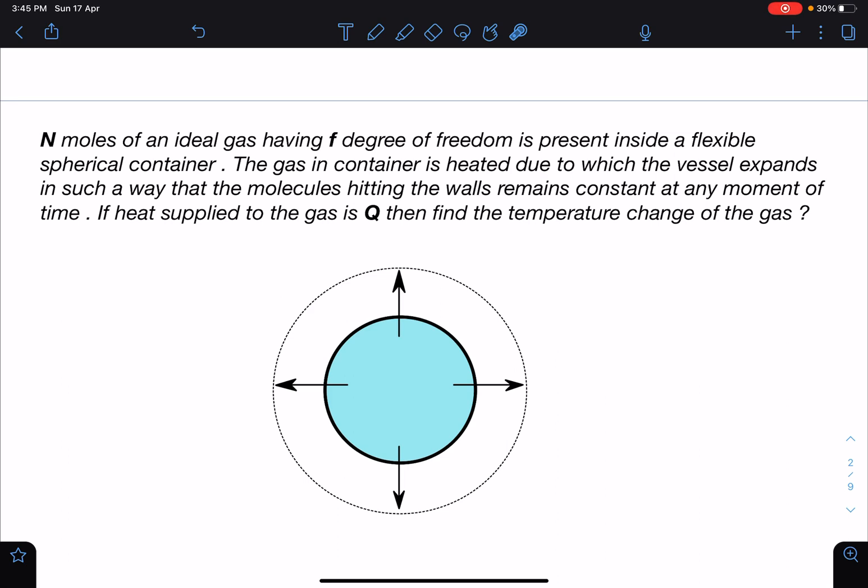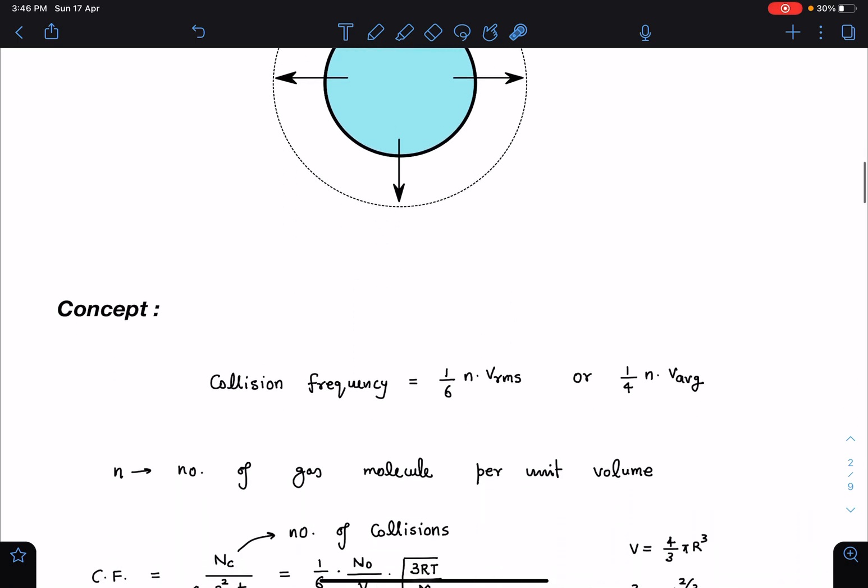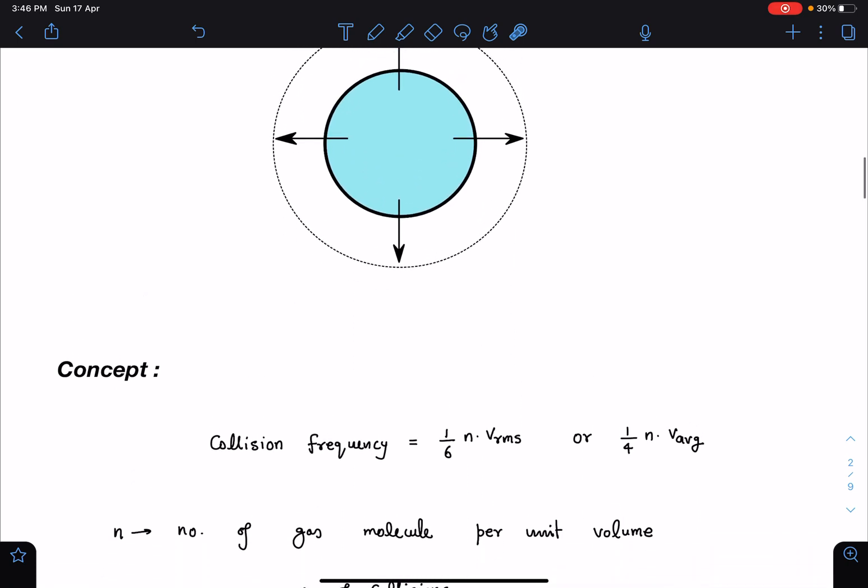Let's discuss the concept part here. We know the collision frequency is 1/6 n v_rms or 1/4 n v_average. Different books use different results, and in fact JEE Mains in the same year gave a problem on collision frequency where they used both formulas. However, our problem will not be affected by which formula we use.